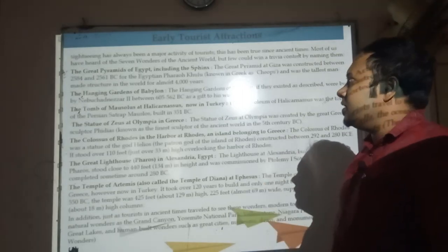The early tourist attractions include: the Great Pyramids of Egypt including the Sphinx, the Hanging Gardens of Babylon, the Tomb of Mausolus at Halicarnassus now in Turkey, the Statue of Zeus of Olympia in Greece, the Colossus of Rhodes in the harbour of Rhodes, the great Lighthouse of Alexandria in Egypt, and the Temple of Artemis, also called the Temple of Diana.